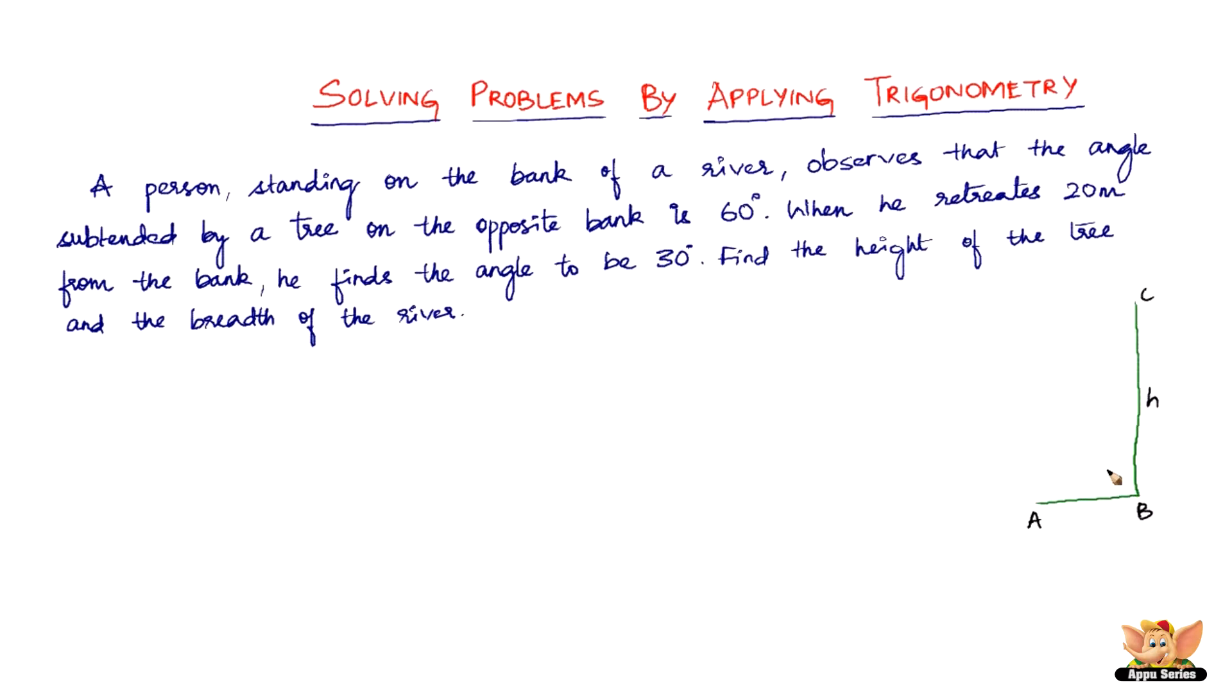Now what this tree does is that it subtends an angle. This is the river and this is one bank and this is one bank. B is one bank where the tree is, and A is the other side of the bank. The tree subtends an angle of 60 degrees on the opposite bank. Let this be the opposite bank and let this be 60 degrees.